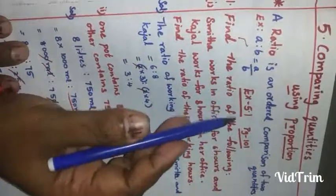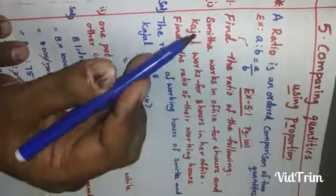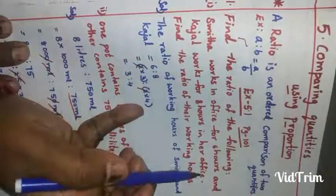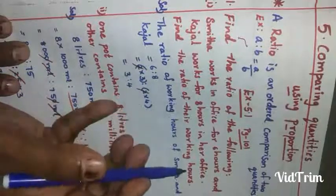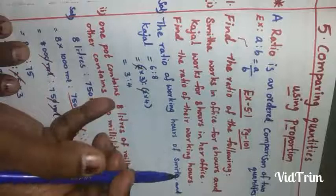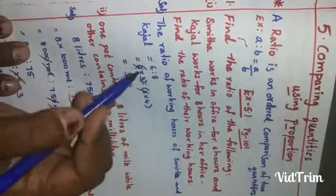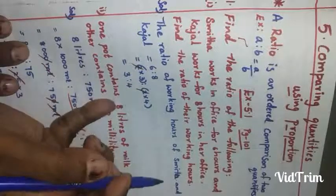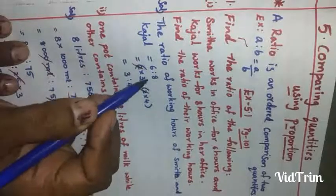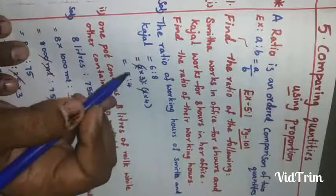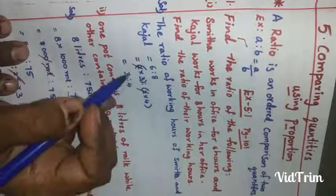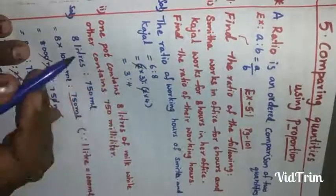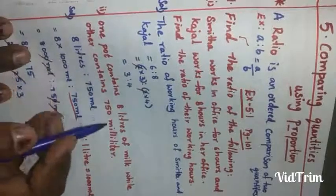Let us go to exercise 5.1, page number 101, first problem. Find the ratio of the following: Smitha works in office for six hours and Kajal works for eight hours. Find the ratio of their working hours. Smitha works for six hours and Kajal works for eight hours. Both are in hours, so we write the ratio as six is to eight. Six equals two into three, eight equals two into four; the twos cancel, giving three is to four as the ratio of their working hours.